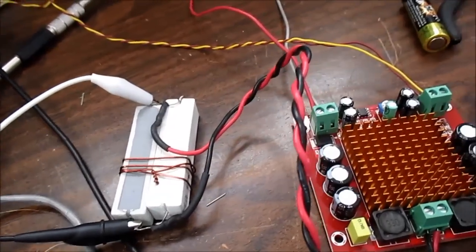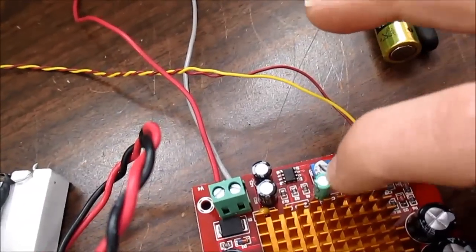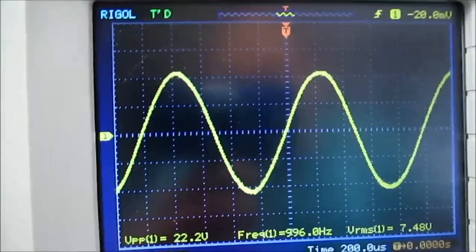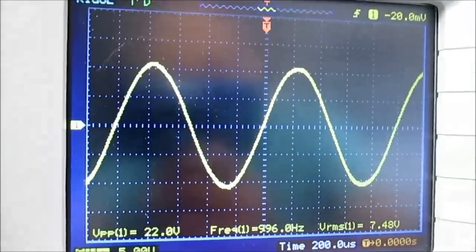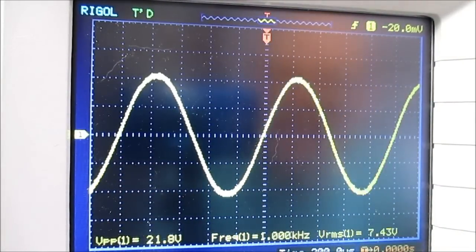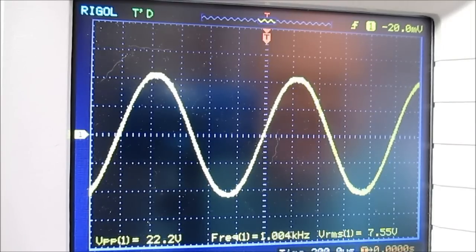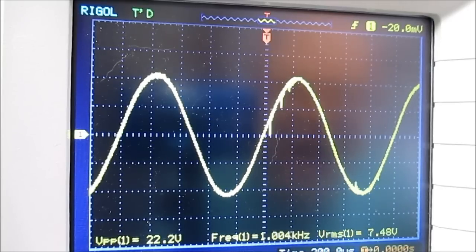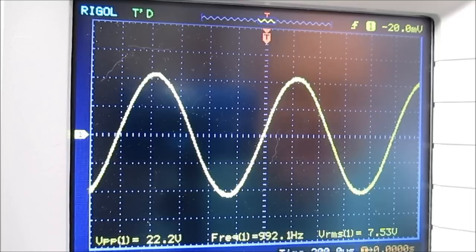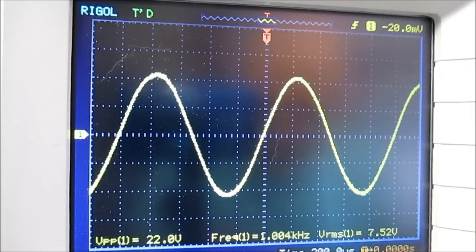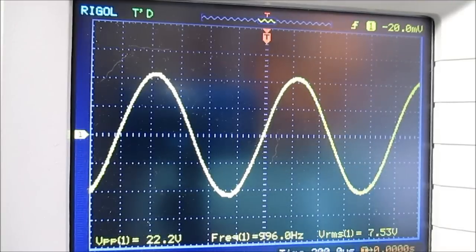Okay, I wired in the 4 ohm load. And the way this hack works, you can still use this control to adjust the level. So, let's see what we can get here. So, we're at one kilohertz. And that's clipping right there. So, we can back that out of clipping. Very nice symmetrical clipping. I will say 7.53 volts RMS. So, we're getting 14.17 watts, which at 12 volts is actually very good.